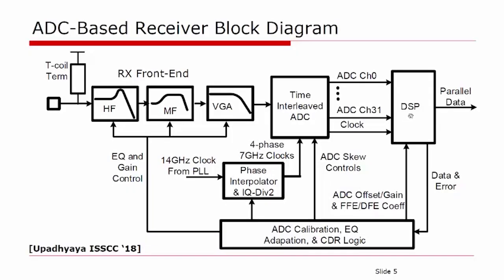The DSP takes the digital symbols and generates the final binary parallel data. ADC calibration performs skew correction of the ADC sampling clocks in the analog domain, and also performs offset and gain correction in the digital domain. Equalization adaptation logic dynamically sets analog equalization settings — the CTLEs — and also dynamically sets FFE and DFE taps in the DSP. A CDR logic adjusts the output phase of the phase interpolator to ensure the ADC sampling clocks are positioned at their optimum sampling point.